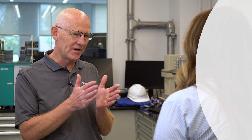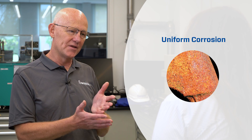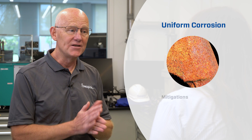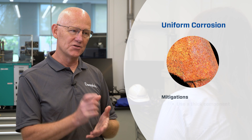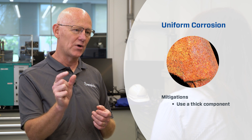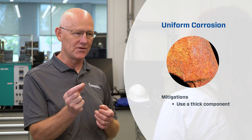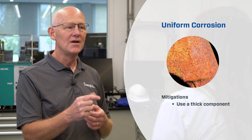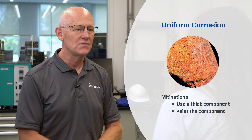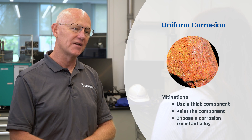So one common type of externally-influenced corrosion is uniform corrosion. As the name implies, you're uniformly corroding something, consuming the material. Mitigation for this is to potentially just use a thick component so that during the corrosion process, over the life of the component, you still are functional at the end. You can also paint the component, or you may choose a more corrosion-resistant alloy.